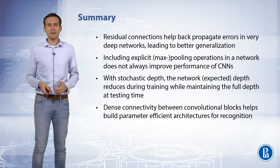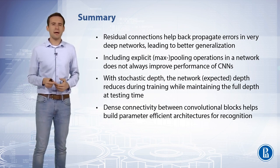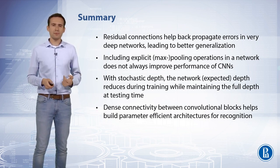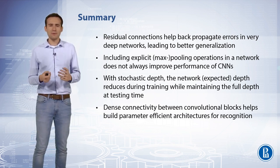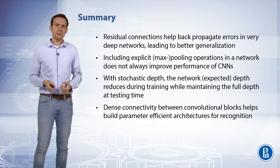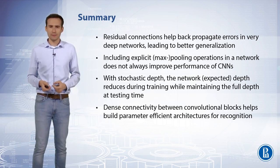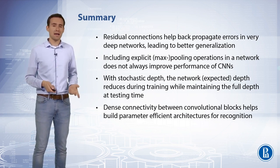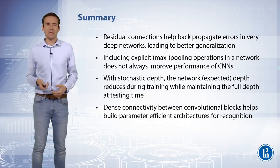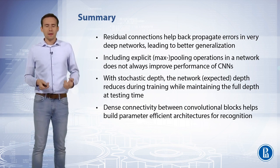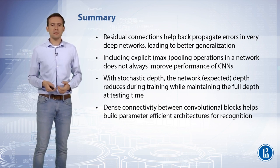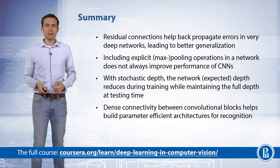To summarize: residual connections help back-propagate errors in very deep networks, leading to better generalization. Some research has shown that we don't really need max pooling operations if we switch the stride of the convolutional layer to be greater than 1 — max pooling does not always improve performance. We can use procedures such as stochastic depth to train very deep networks, since the expected depth reduces during training while maintaining full depth at inference. Dense connectivity patterns, as introduced by DenseNet, offer one possibility to build parameter-efficient architectures while maintaining or even improving accuracy and training speed.